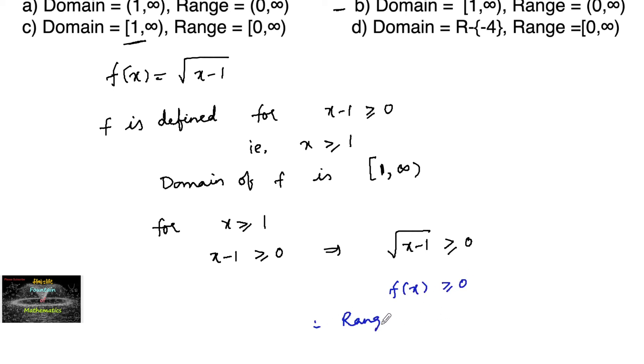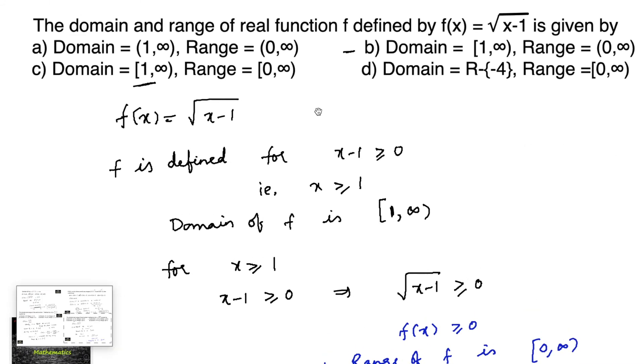Therefore, the range of the function f is [0, ∞). Among the two options b and c, we can go with option c because 0 is included.